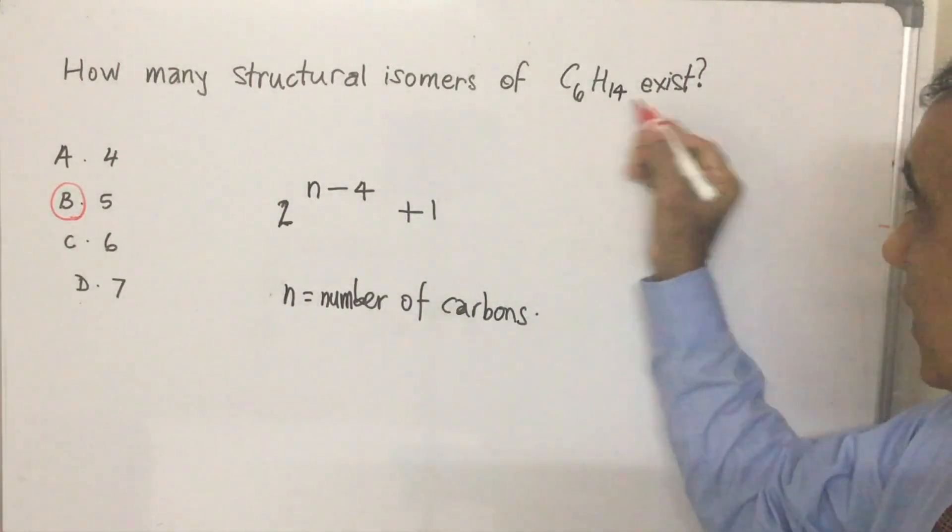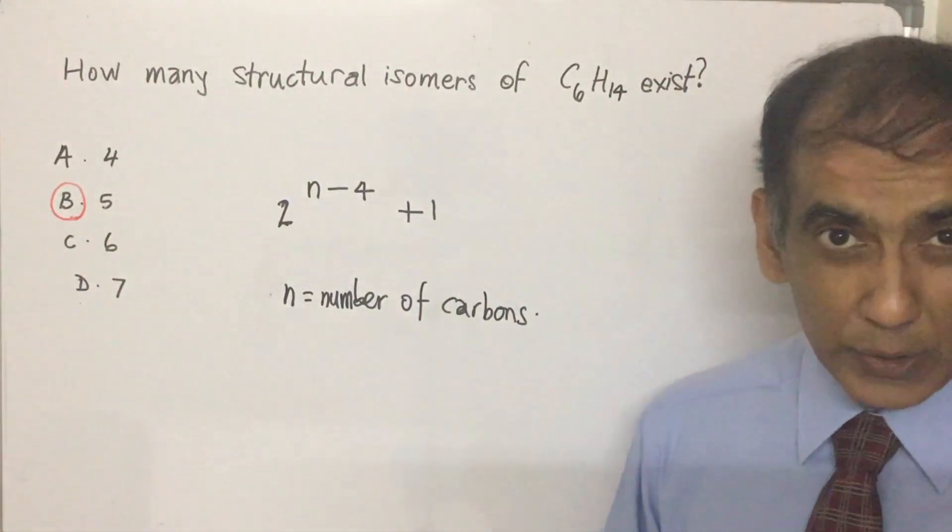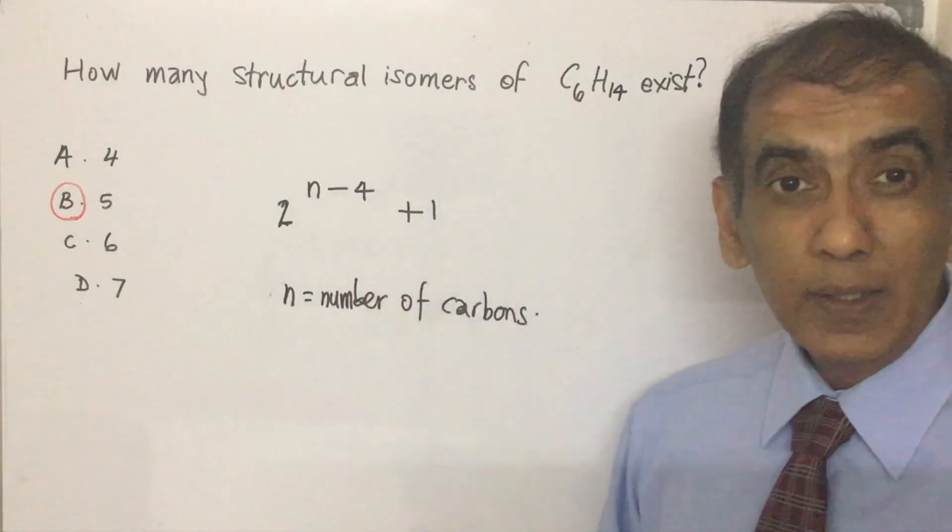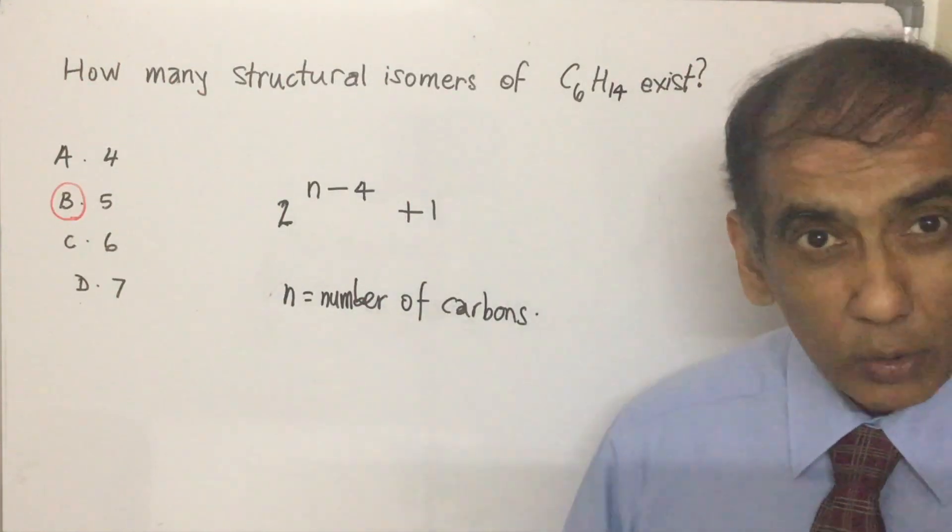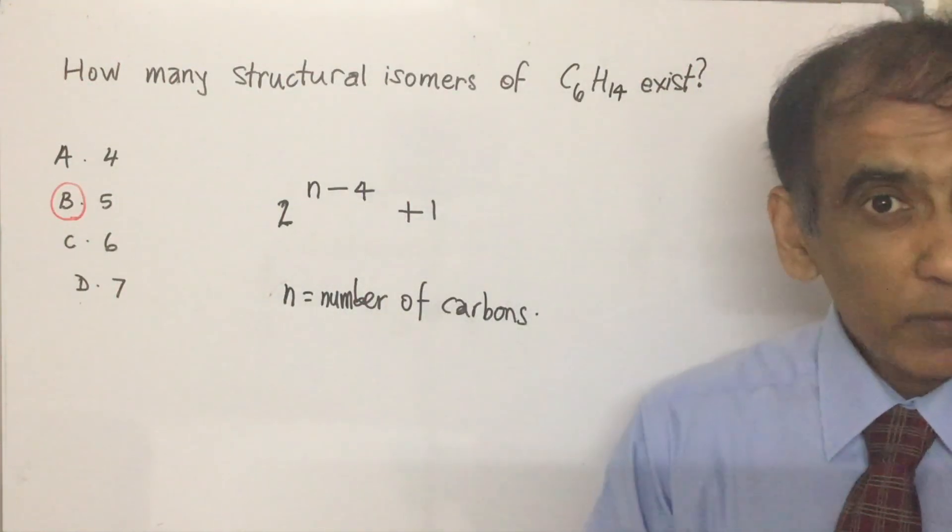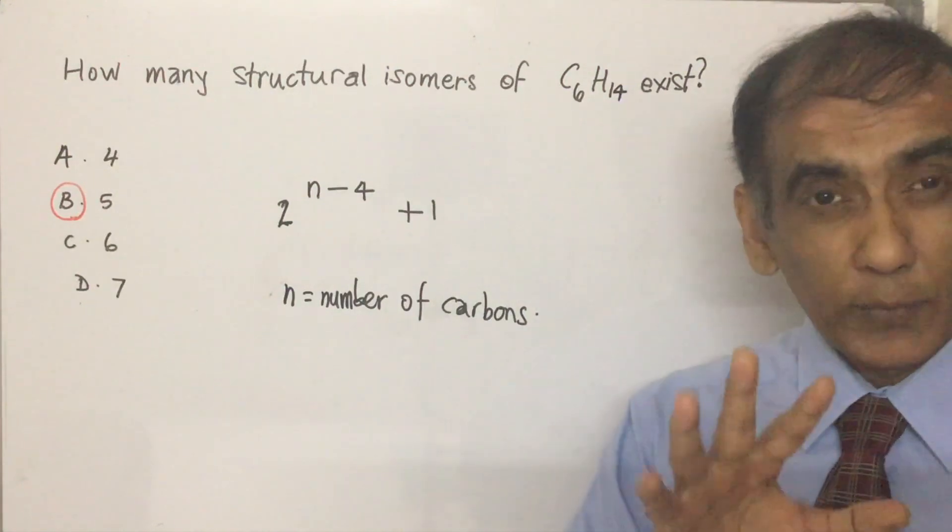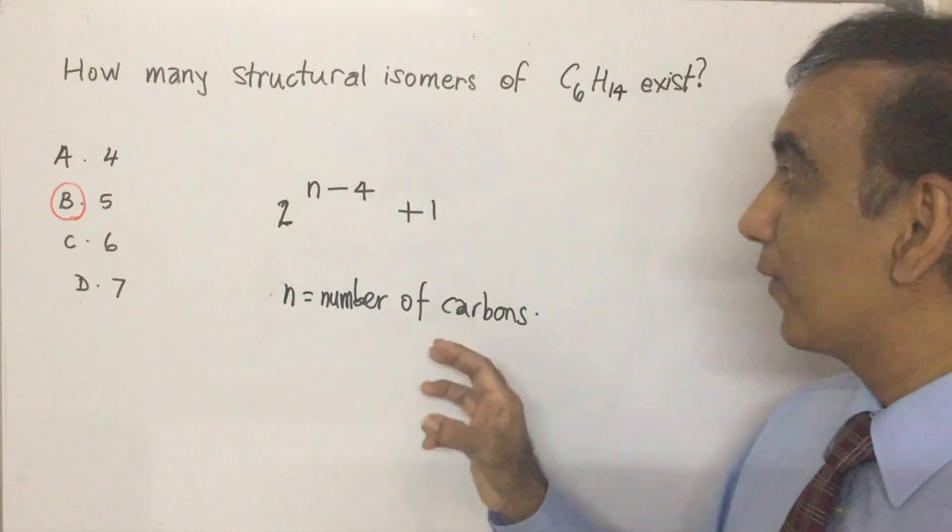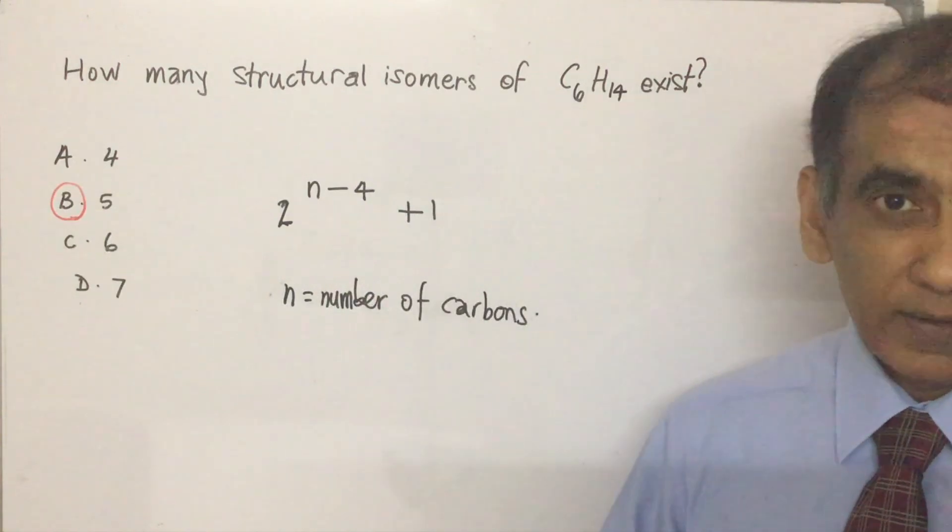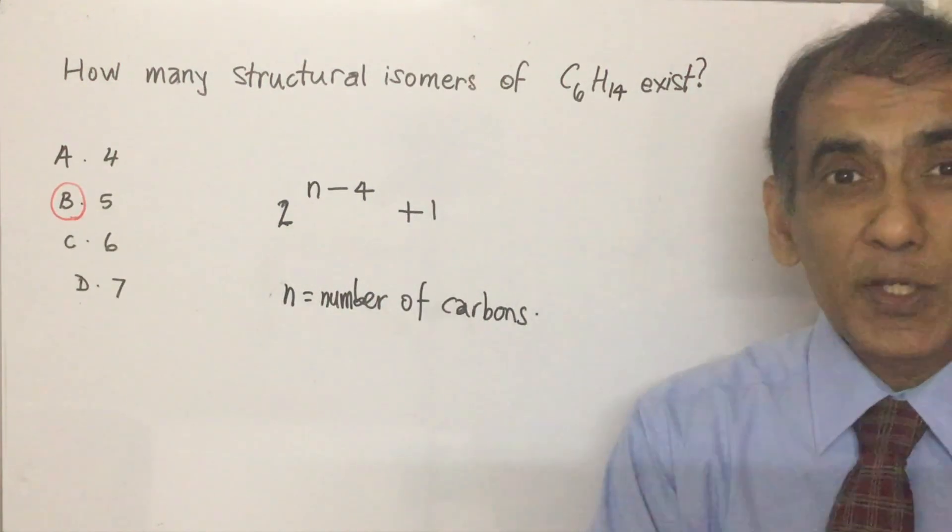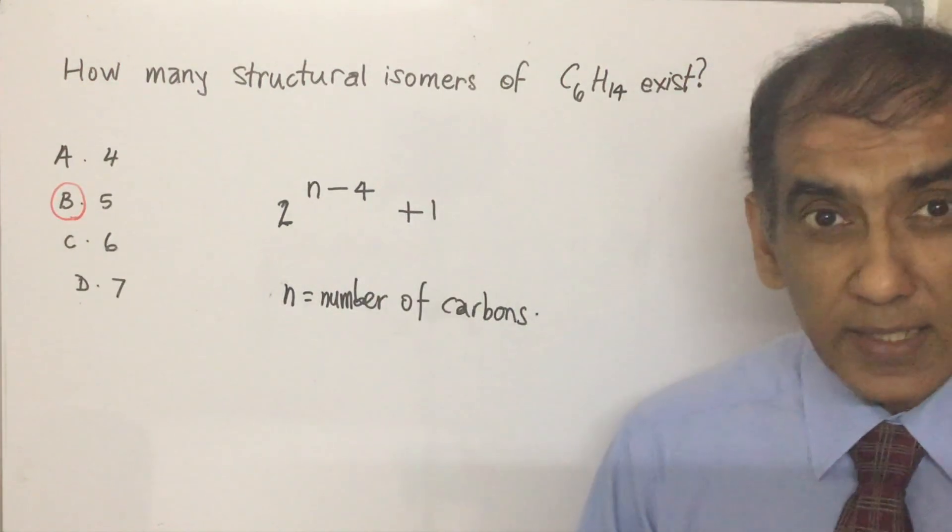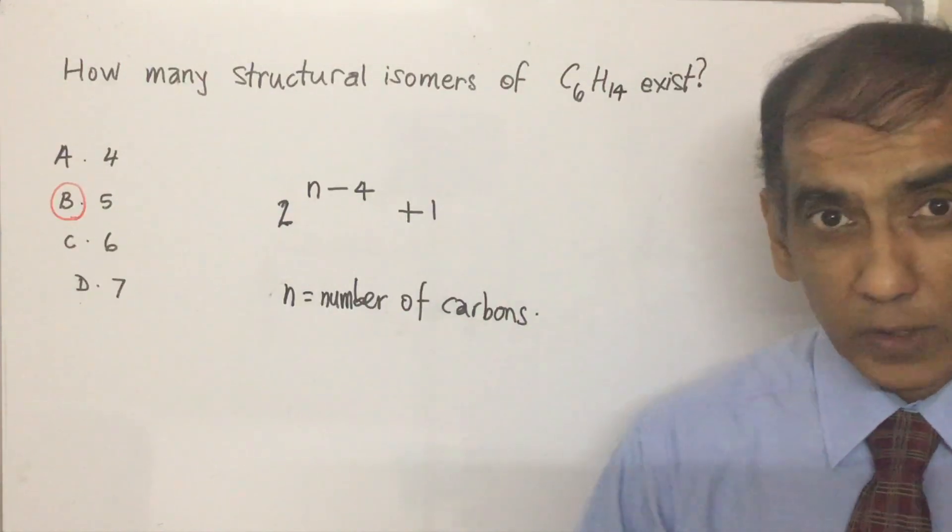By rote learning that C6H14's got five isomers, using a formula, or by simply trying to draw all of them out. Whichever works for you in the exam, it's fine. Of course, the real learning comes from being able to draw the five structural isomers. That's where you genuinely show your understanding of what is structural isomerism.